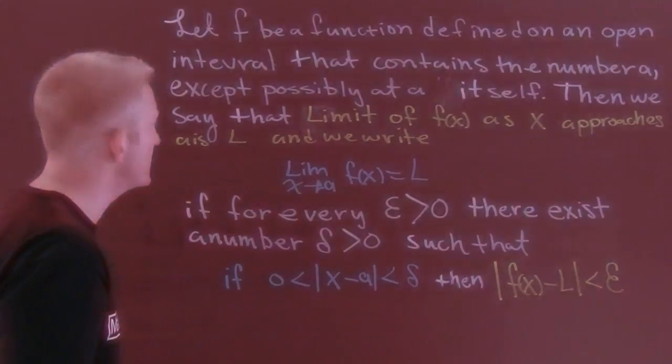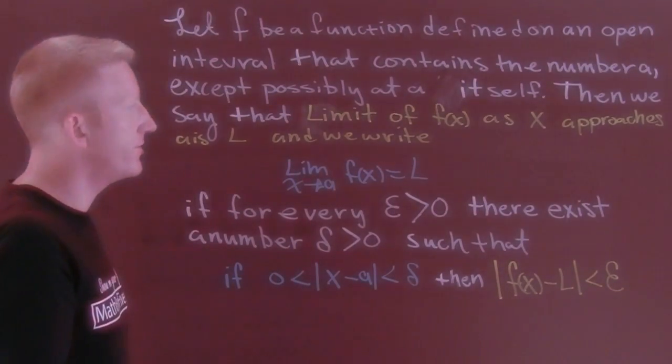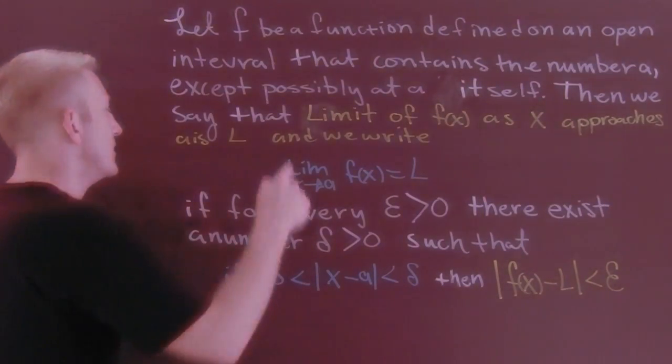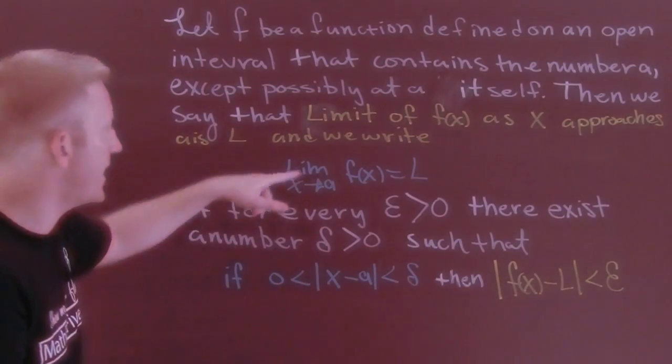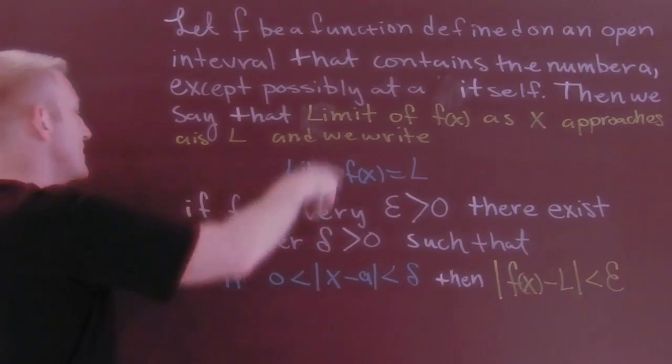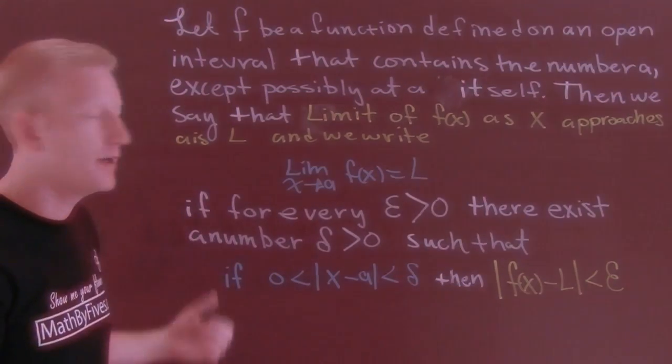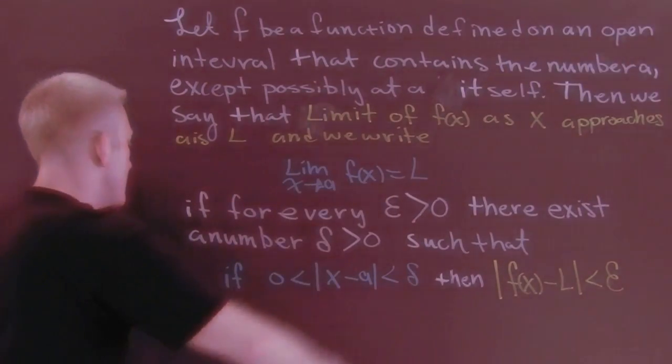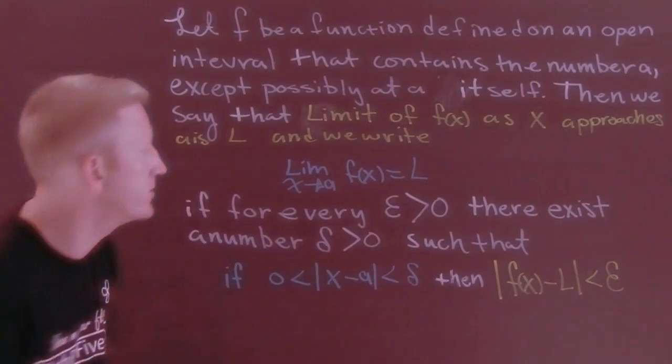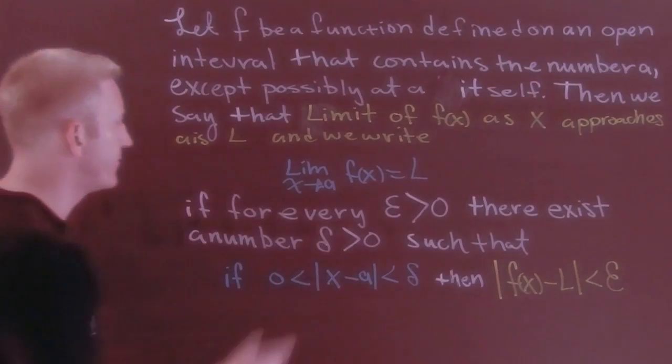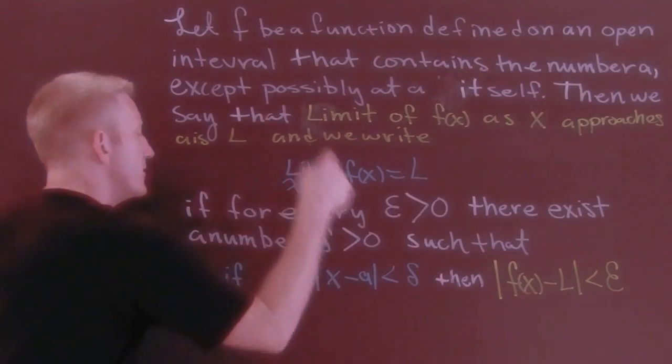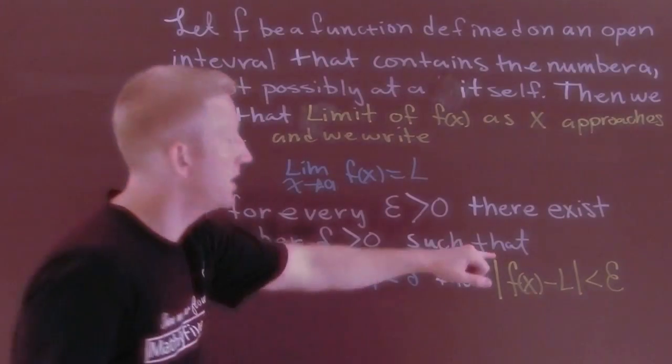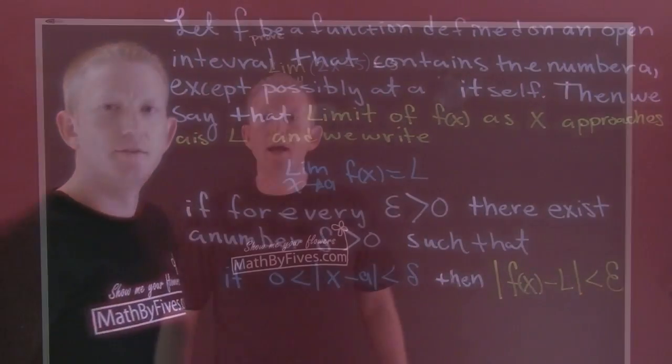Then we say the limit of f(x) as x approaches a is L, and we write the limit as x approaches a of f(x) is L. And here's the good part: if for every epsilon bigger than zero there exists a number delta bigger than zero such that if the absolute value of x minus a is smaller than delta, then the absolute value of the function minus the limit is smaller than epsilon. And now that we have that definition, we need a game plan.